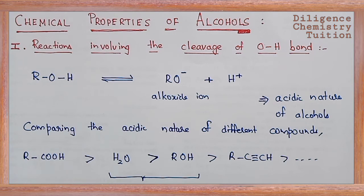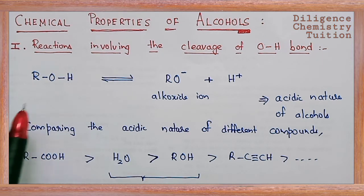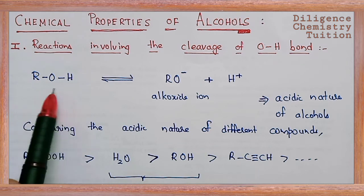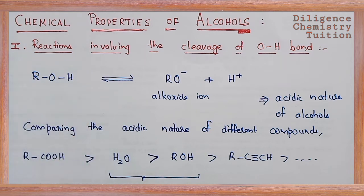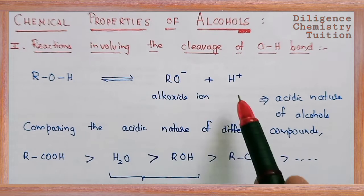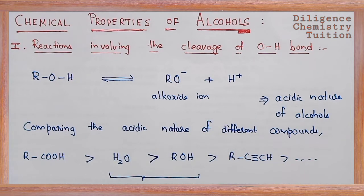Chemical Properties of Alcohols. Reactions involving the cleavage of the OH bond. In the alcohol molecule ROH, the OH bond undergoes cleavage. This gives RO-H breaking into RO⁻ and H⁺. The RO⁻ ion is called the alkoxide ion.